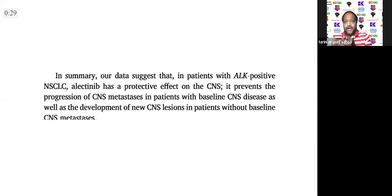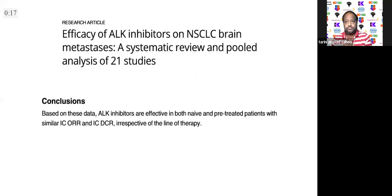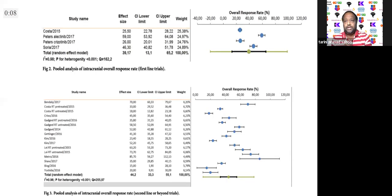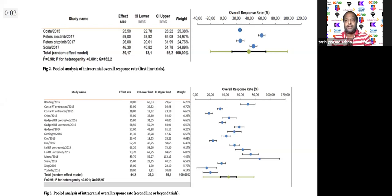In summary, data suggests that in ALK-positive non-small cell lung cancer, alectinib has a protective effect on CNS — it prevents both the progression of existing CNS disease and the development of new CNS disease. A meta-analysis of ALK inhibitors further confirms the same. The forest plot shows that ALK inhibitors, especially alectinib, do a very good job.